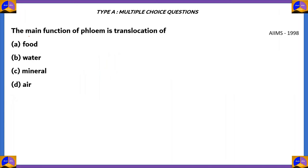Next question. The main function of phloem is the translocation of: A, food; B, water; C, minerals; D, air.